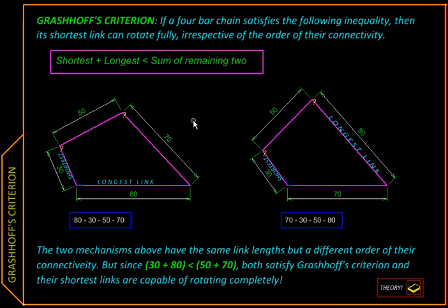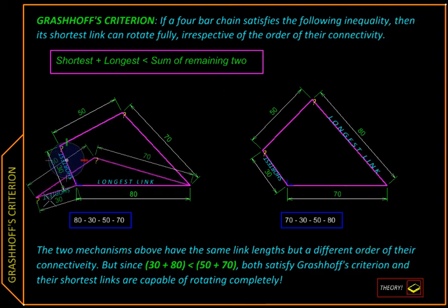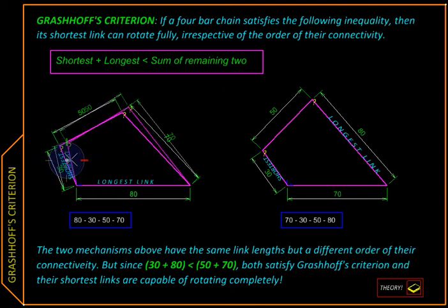To possess a crank, our four bar must satisfy Grashov's criteria, which says that the shortest and the longest link should add up to something less than the sum of lengths of the other two links. Once we have satisfied that, we can get a crank. So here we have a crank.